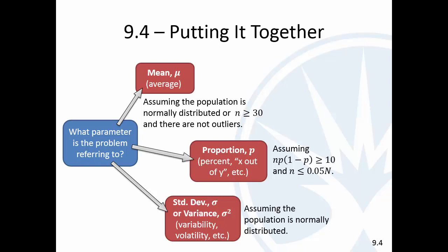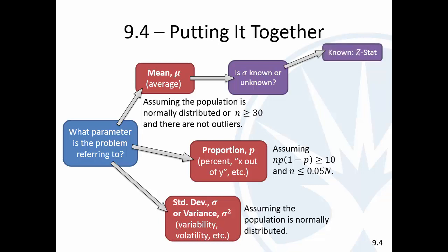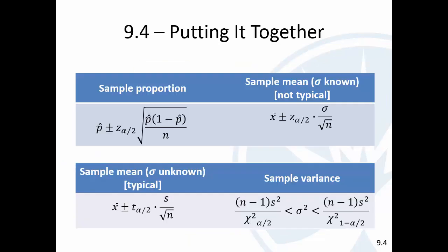There's one other condition. With the mean, there are two possibilities, and it depends on whether the population standard deviation is known or unknown. If it's known, then it's a Z statistic. If it's unknown, then it's a T statistic. Here are the confidence intervals — giving you these isn't that helpful because we're going to have access to StatCrunch for that.